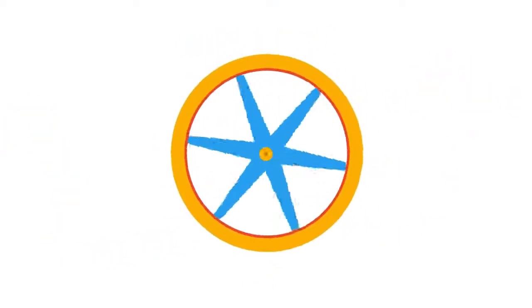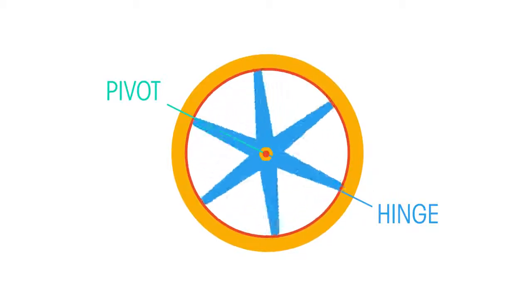A force can turn an object around a hinge or a pivot. For example, opening a door uses a turning force. The door turns around the hinges. This turning force is known as the moment of the force.